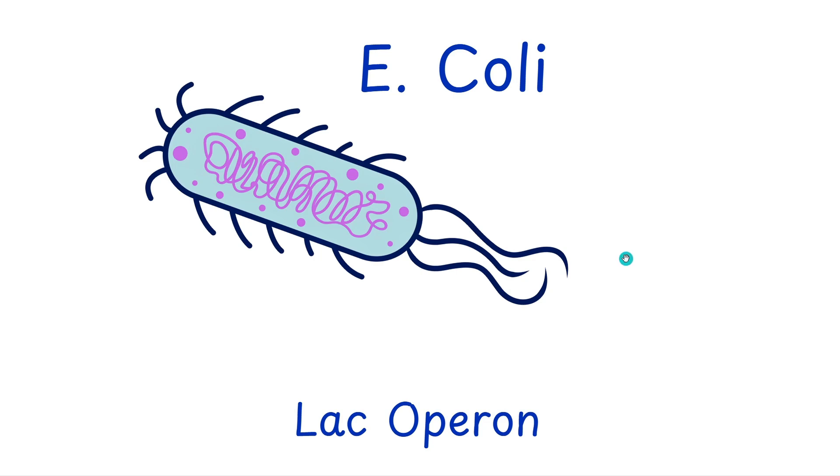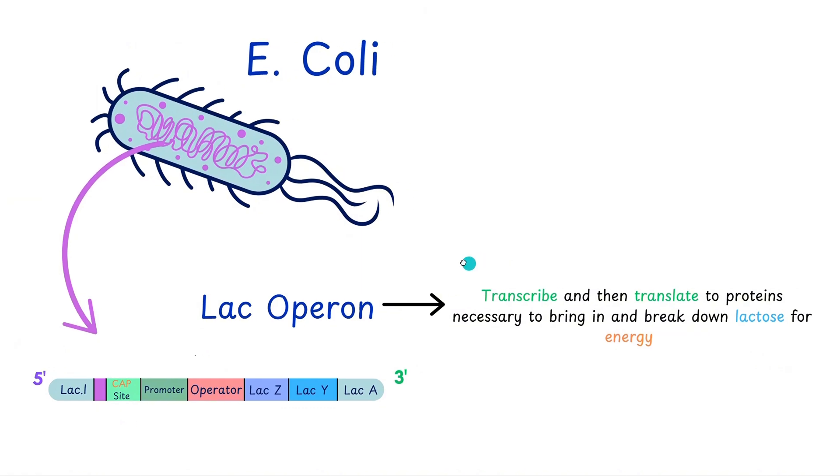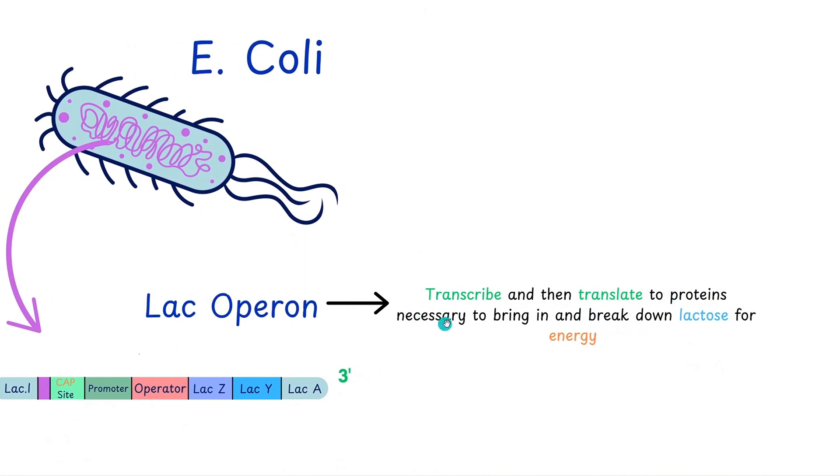So starting off, let's talk about what the lac operon is. The lac operon is a segment of a single circular chromosomal DNA of the E. coli bacteria. The whole point of the lac operon is to transcribe and then translate to proteins necessary to bring in and break down lactose for energy.